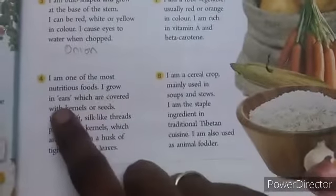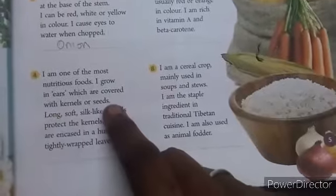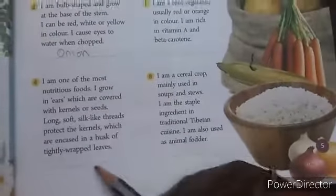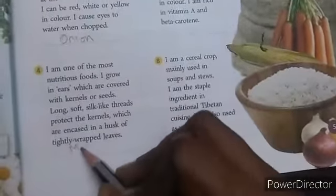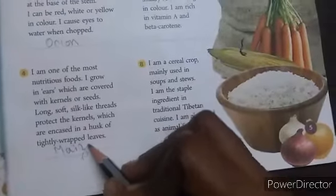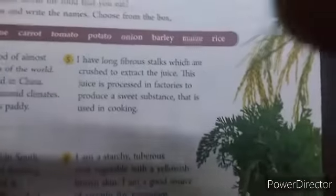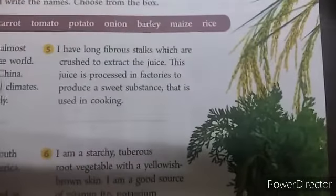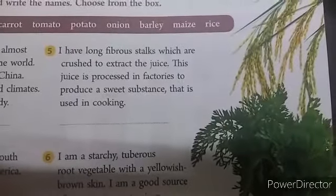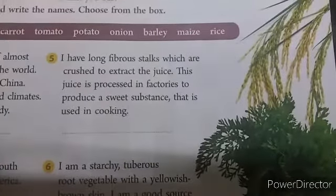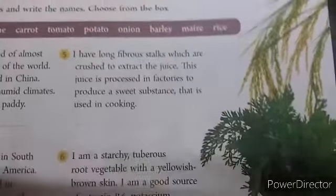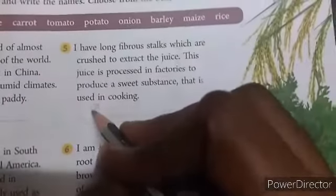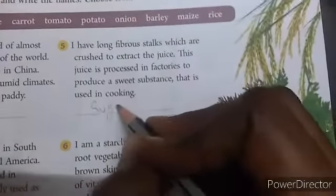Fourth one: this is the nutritious food. It grows in ears which are covered with kernels or seeds. The answer for that is Maize. Next one: I have long fibrous stalks which are crushed to extract the juice. This juice is processed in factories to produce a sweet substance used in cooking. The answer is Sugarcane.